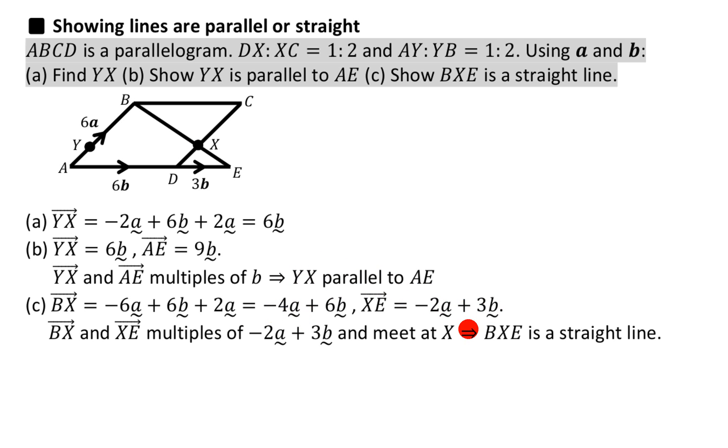XE is equal to minus 2a plus 3b. And then we go, does it have anything in common? What I really want to say is: are both of these multiples of the same vector?